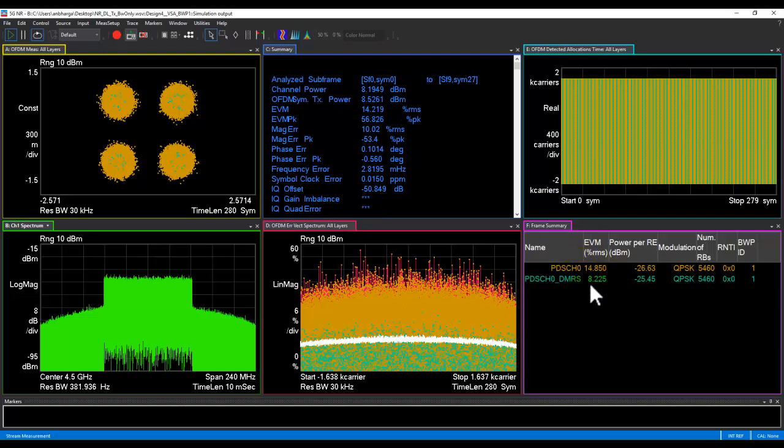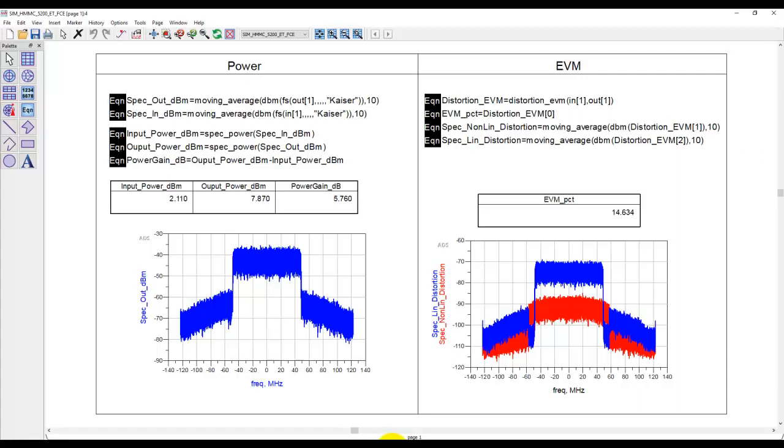And in here, if you observe, we get an EVM for PDSCH channel, which I have activated right now as 14.8%, which is very well co-aligned with 14.6%, which we were getting in ADS.